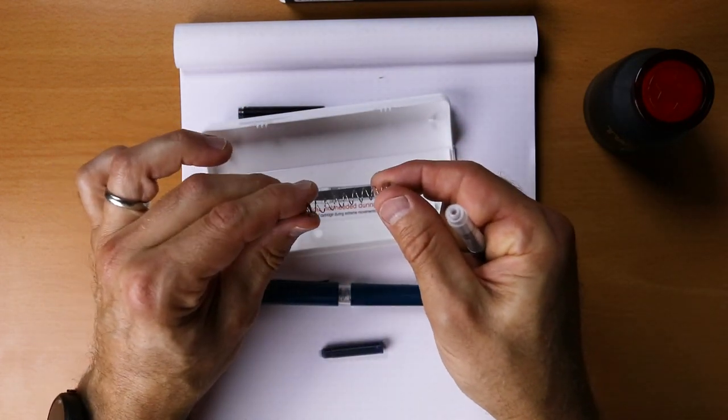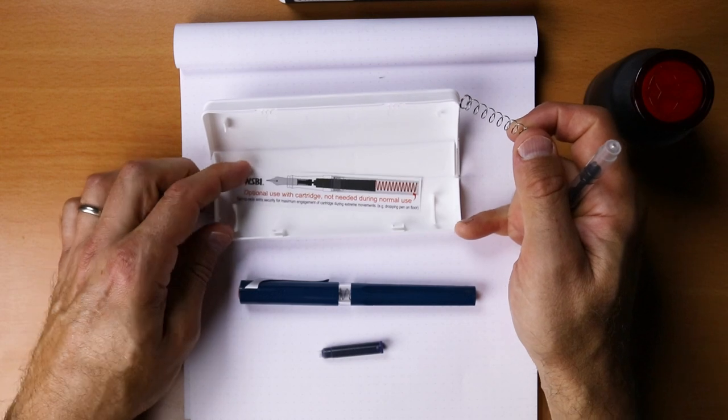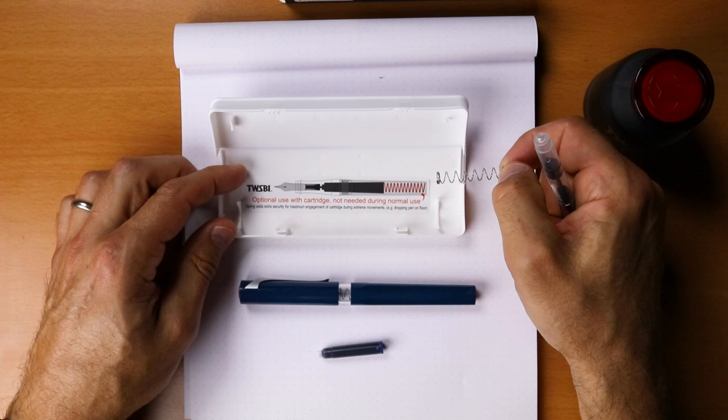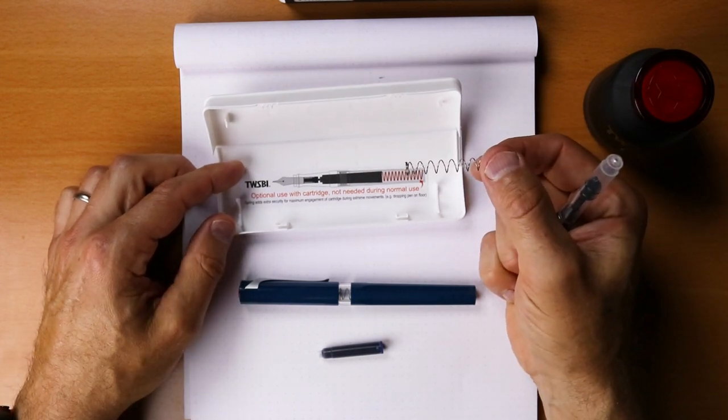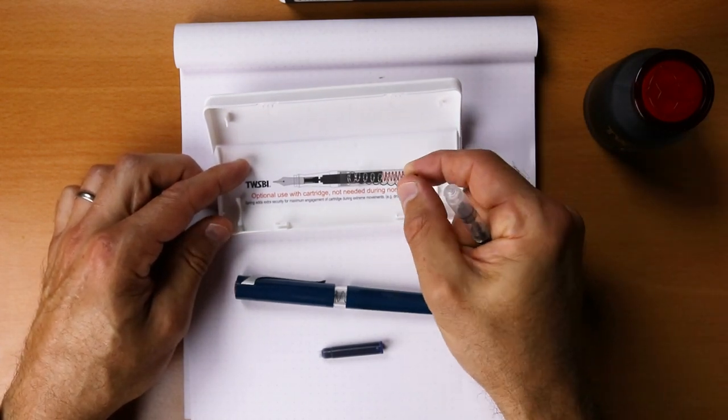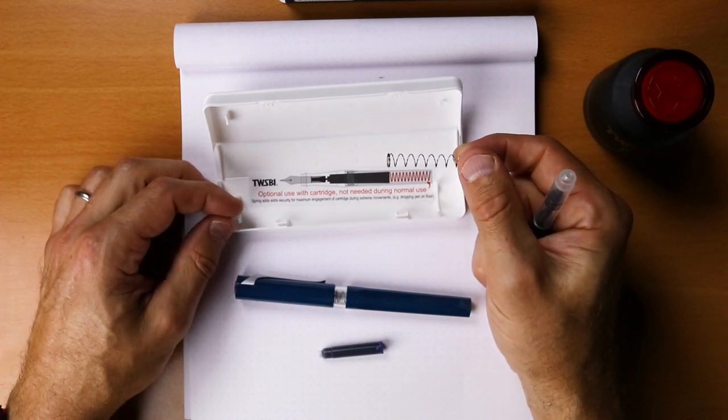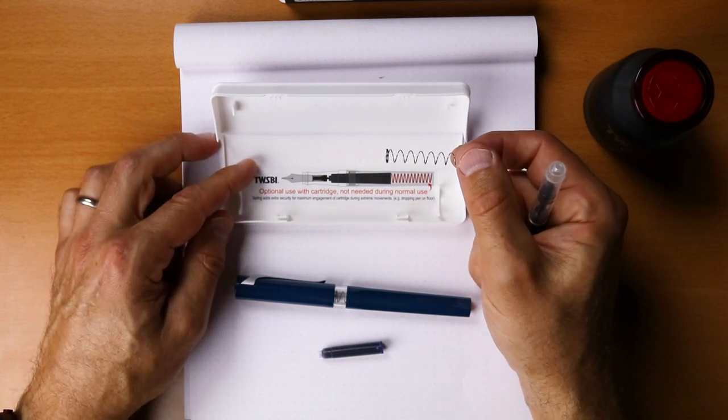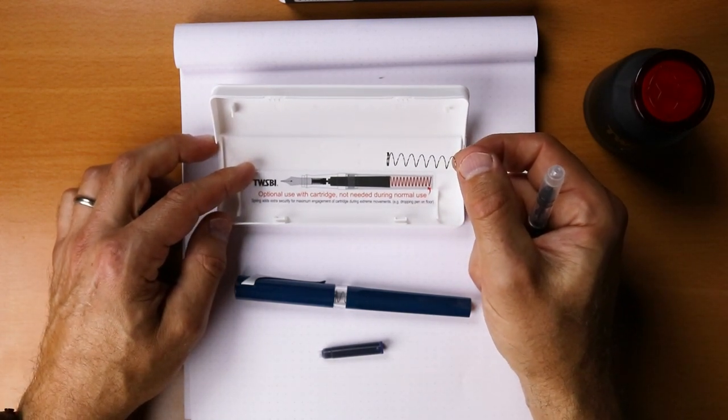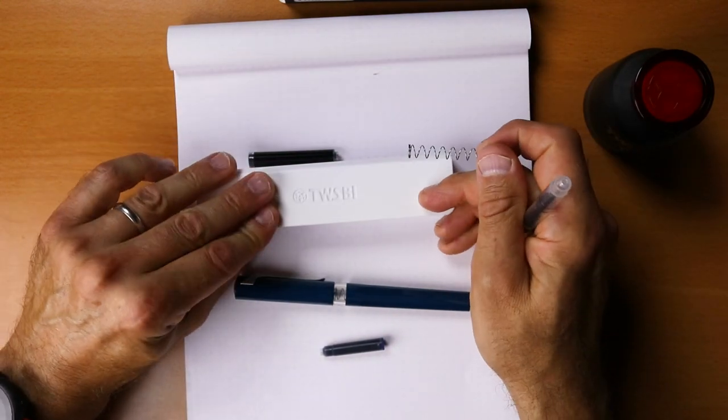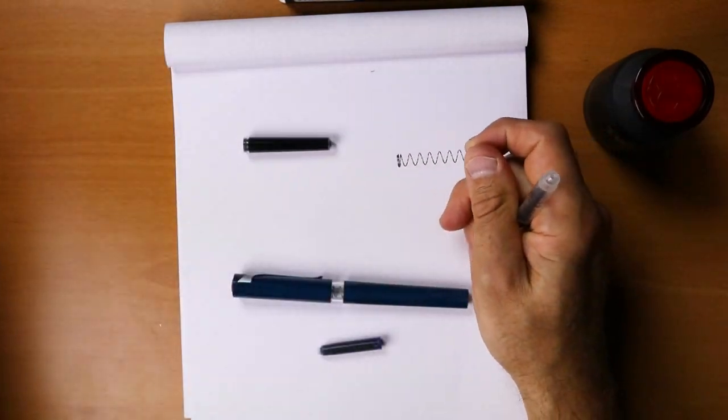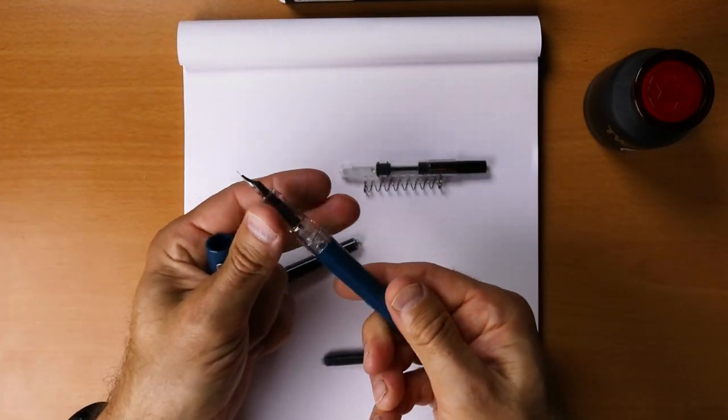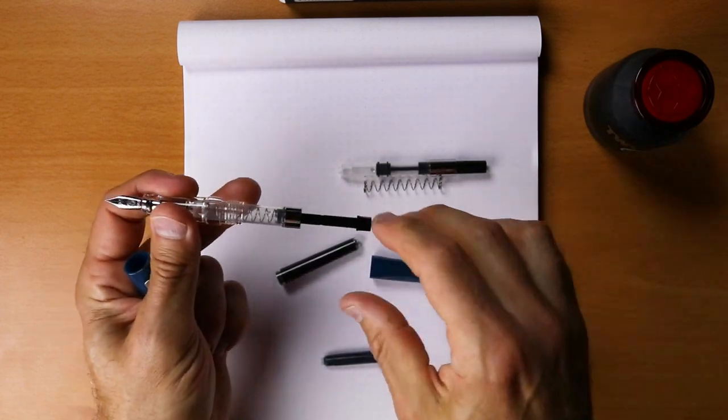You might be wondering what this spring is for. We have a little bit of instructions in here. Optional use with cartridge. Not needed during normal use. So, you could put the spring in the back of the pen there just to keep the cartridge tight against the feed and make sure it doesn't slip out as you're throwing it around or commuting or putting it into your pocket or whatever you happen to be doing.